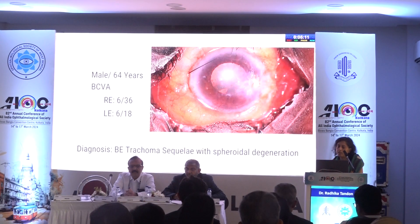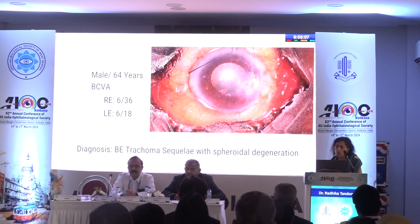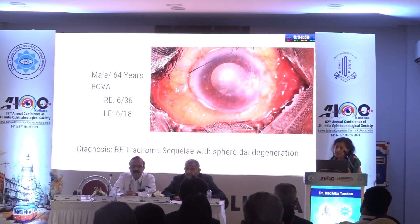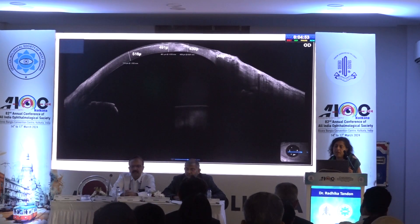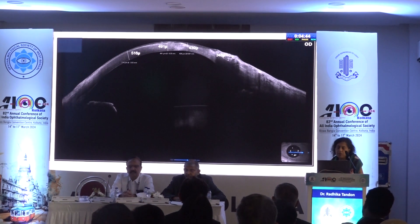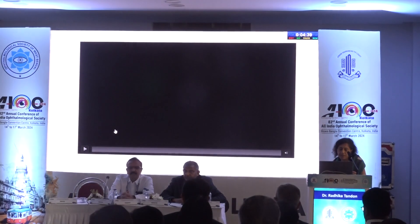This is another patient who was 64 years old, diagnosed as a case of trachomatous keratopathy with spheroidal degeneration, with vision of 6/36 and 6/18. In such cases it's important to know the nature and extent of the cataract to decide whether you want to do a single-stage or two-stage procedure. The ASOCT showed a considerable amount of irregularity, and you'd also like confirmation about the thinnest point. We then planned a deep anterior lamellar keratoplasty.